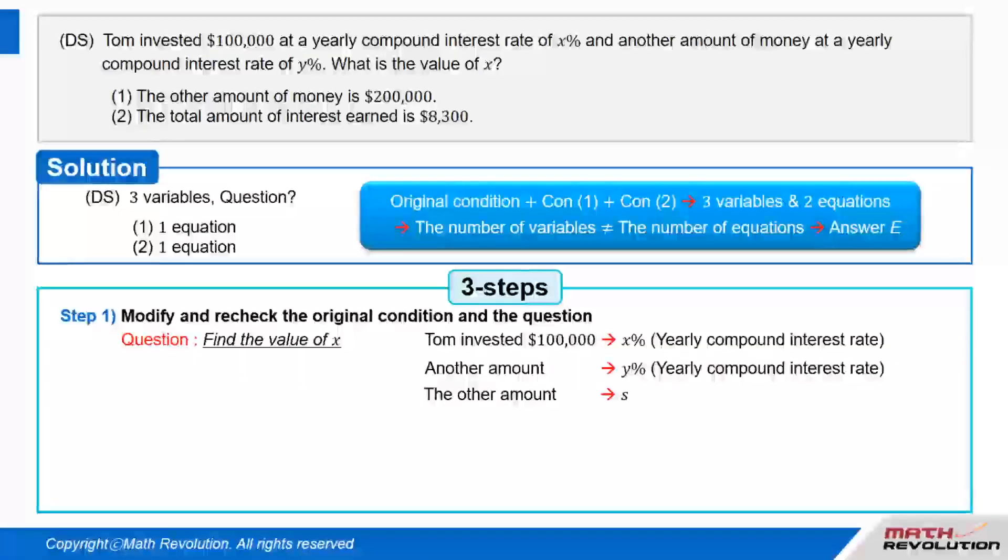Follow the first step of the variable approach by modifying and rechecking the original condition and the question. We have to find the value of X if Tom invested $100,000 at a yearly compound interest rate of X percent and another amount of money at a yearly compound interest rate of Y percent. If we make S equal to the other amount, we will have three variables: X, Y, and S. Don't worry. Just use the variable approach. It takes care of most of the hard work for you.